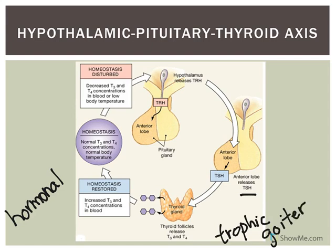TSH is regulated by the hypothalamic hormone TRH, thyrotropin-releasing hormone. We refer to this collectively as a hypothalamic-pituitary-thyroid axis. T3 and T4 are subject to classic negative feedback regulation. If T3 and T4 levels increase in the blood, they will eventually come back and inhibit TRH, as well as inhibit TSH secretion.